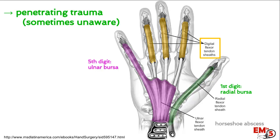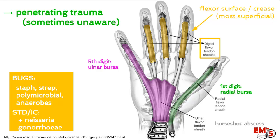It's usually caused from penetrating trauma, and many times the patient isn't even aware because it happened a day or two ago, maybe even weeks ago. So you do have to ask them if they had any punctures to the fingers, specifically along the flexor surface, especially in the crease of the finger — that's where the tendon sheath is most superficial. As for the bacteria involved, it's usually staph or strep, but it can be polymicrobial and include anaerobes. For people with recent STDs or who are immunocompromised, think about Neisseria gonorrhea as well.